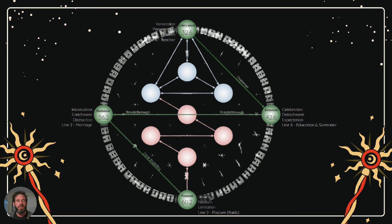Here in green, you see the activation sequence. The prime gifts — if you look at the very top sphere — is preservation. All the way over to the right is detachment. All the way over to the left is enrichment. And down at the bottom is realism. So those are my four prime gifts.